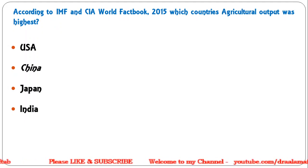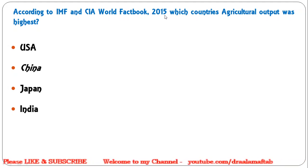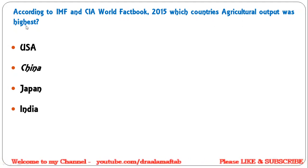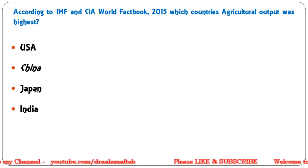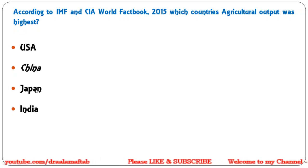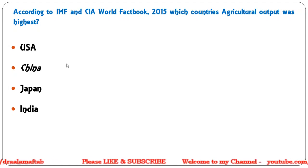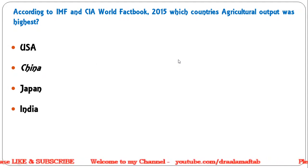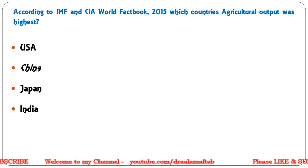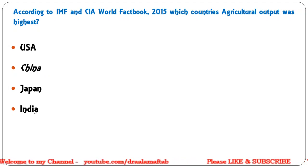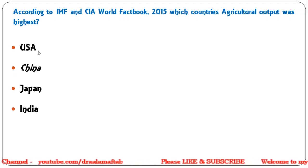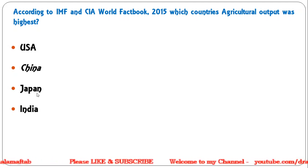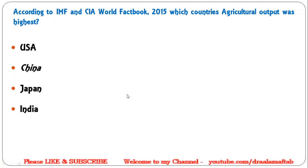Next question: according to IMF and CIA World Fact Book 2015, which country's agricultural output was highest? Options are USA, China, Japan, or India. The correct answer is China — China's agricultural output was highest, India was second highest, United States was third highest, and Japan was at 10th position.